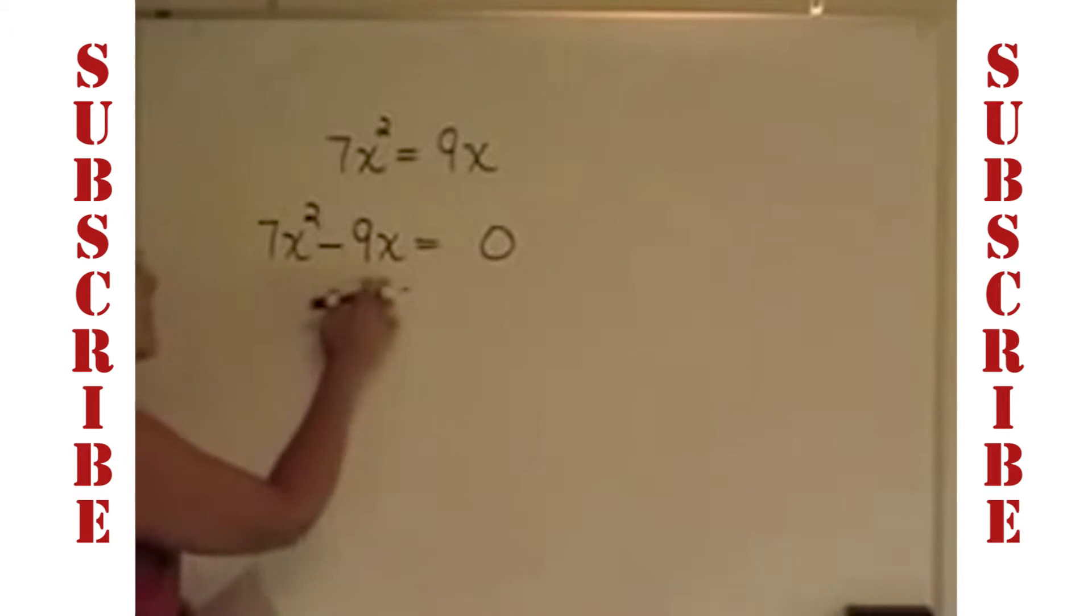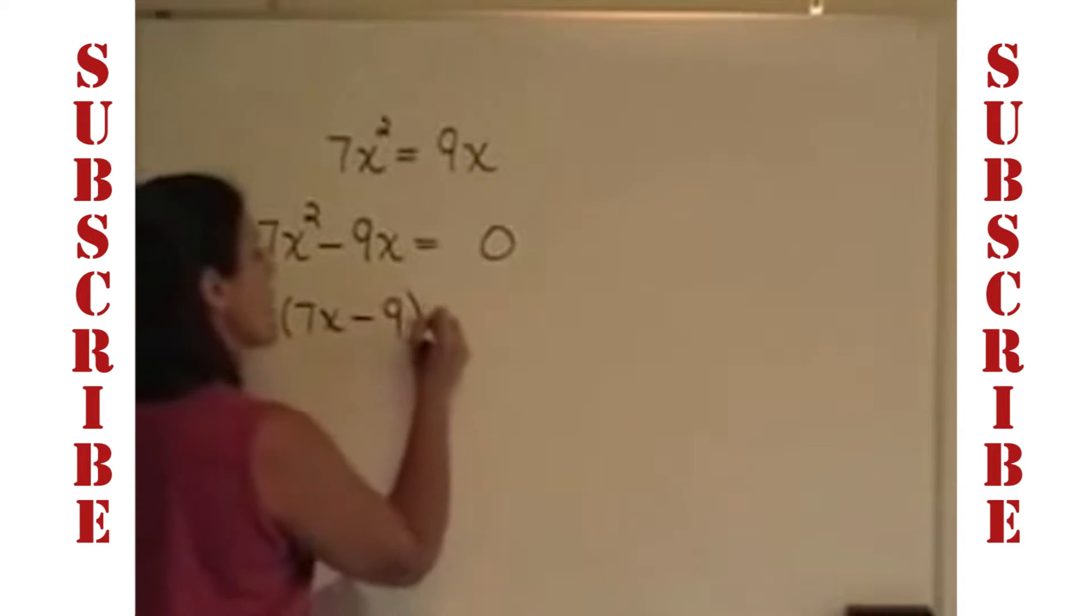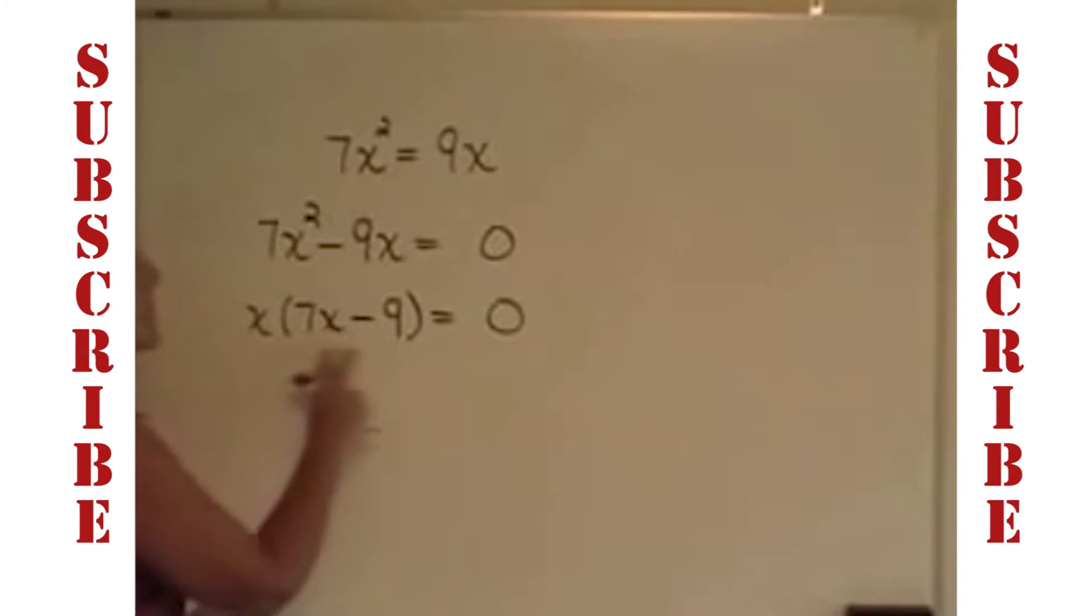I now am ready to factor this because I have 0 on one side, and to begin with, I need to take the greatest common factor out, which is an x. Remember, my broken record, that is always the first step in factoring. Having done that, this is two terms. So what I'm wondering is, is it the difference of squares? Well, while I can take the square root of 9, I cannot take the square root of 7. I cannot do anything further with this. This is not the difference of squares, and also the variable x is not raised to an even power. I'm done.